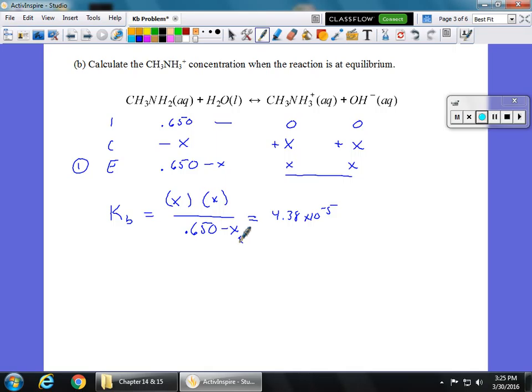Like we've done before, we're going to assume that this little x down here is a zero, so that it's roughly equal to 0.650 instead. So that's going to leave us with x squared equals 4.38 times 10 to the negative fifth times 0.650.